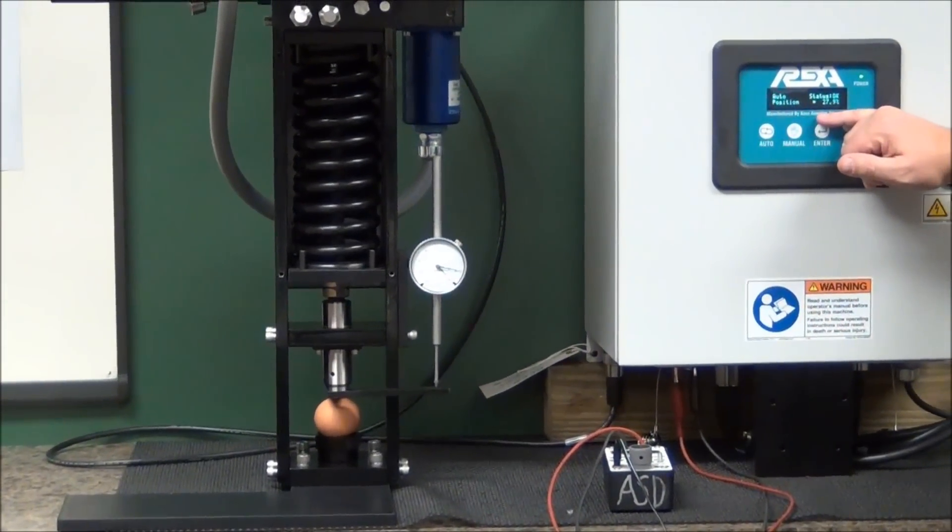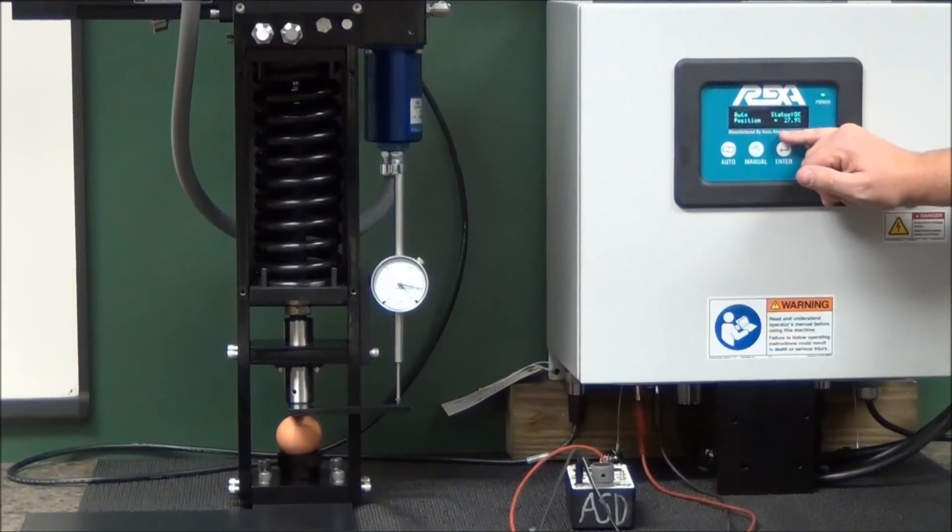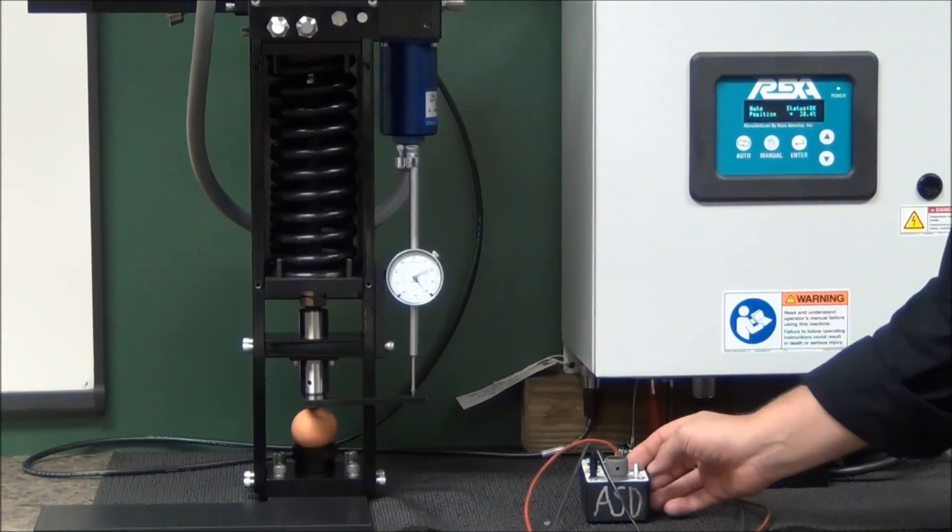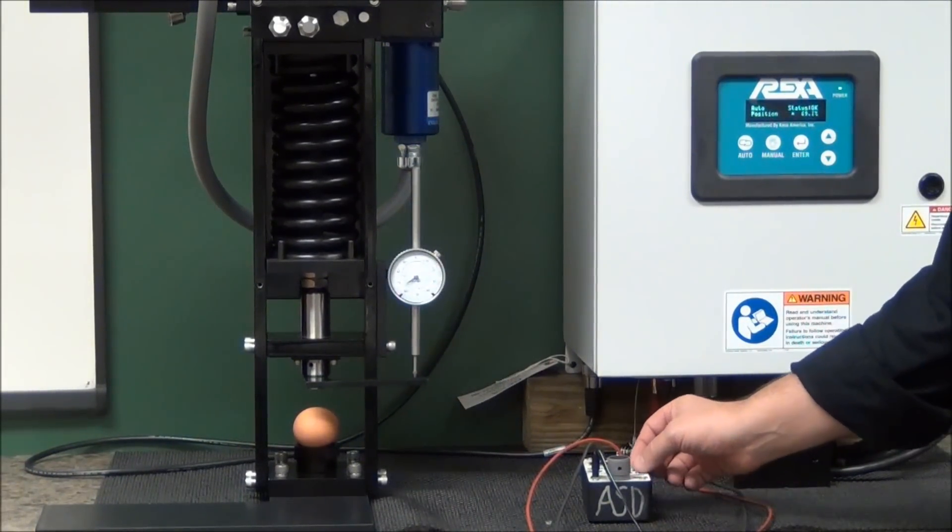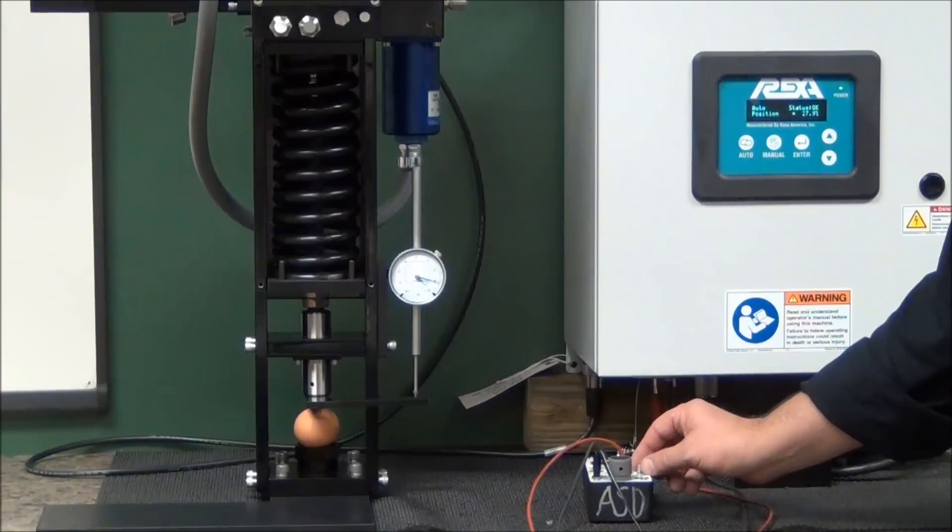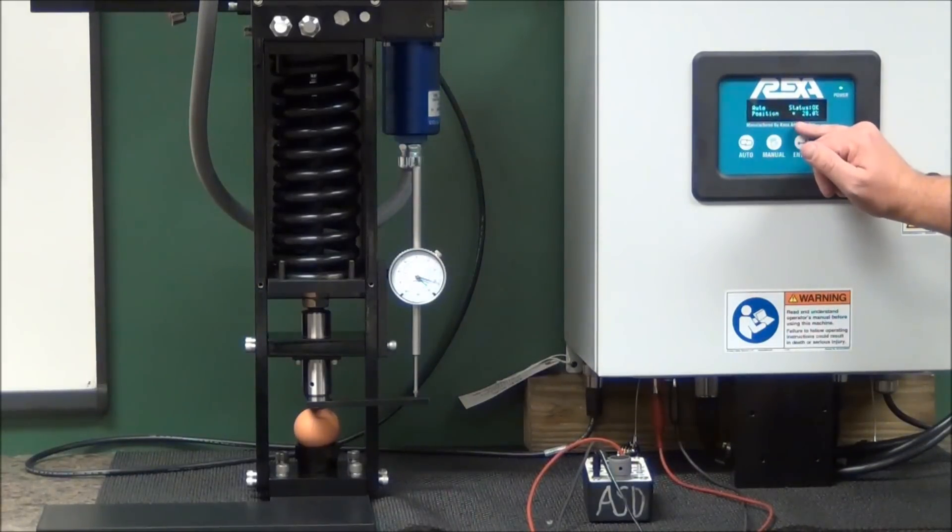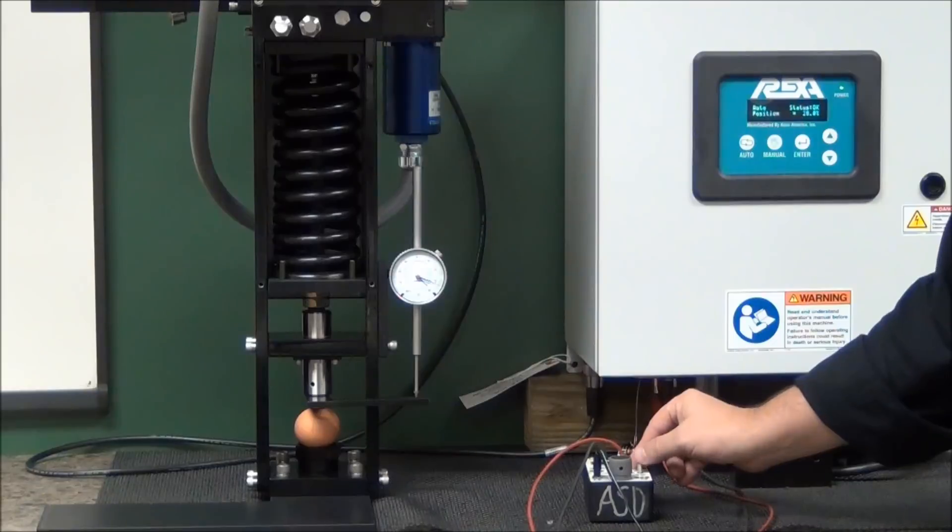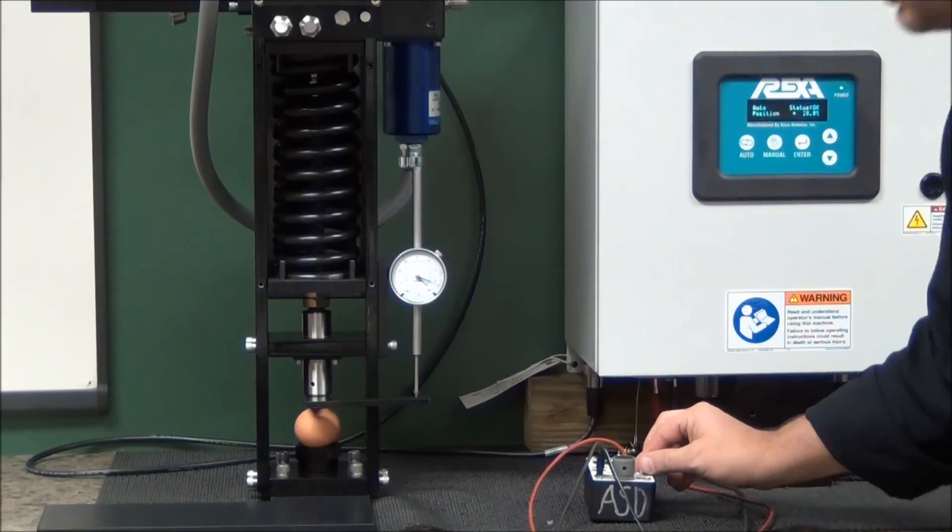Now I'm going to run it up to 100% and bring it back down to 27%. So I've instantly brought my signal from 100% to 28%. The egg did not break. It did not overshoot.